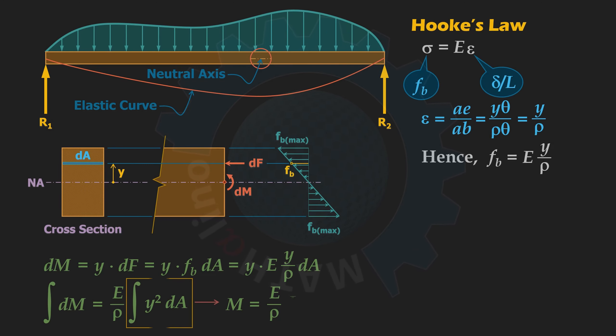Rearrange, we have this equation: one over rho is equal to M over EI. Wow, can you see that we just wrote the reciprocal of the radius of the deformed beam? Are you familiar with this quantity? Do you recall something?